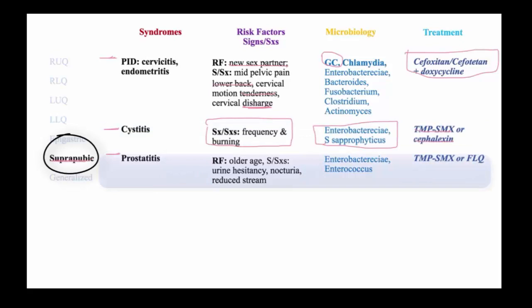Prostatitis is usually an uncommon manifestation of suprapubic pain, but occurs in typically older men with signs and symptoms of prostatism, including urine hesitancy, nocturia, and reduced urinary stream, caused by Enterobacteriaceae and Enterococcus. It is treated with drugs that uniquely penetrate the prostate, which would be trimethoprim-sulfa or fluoroquinolones.